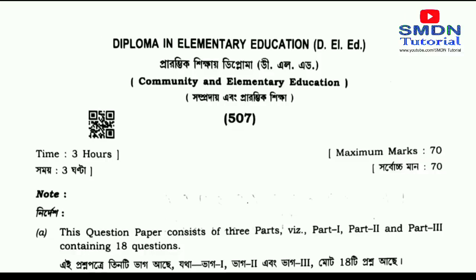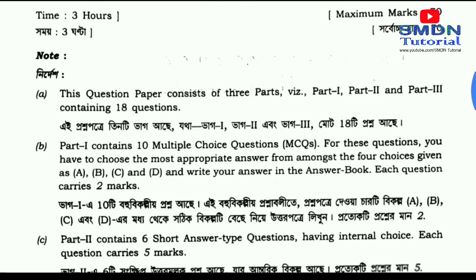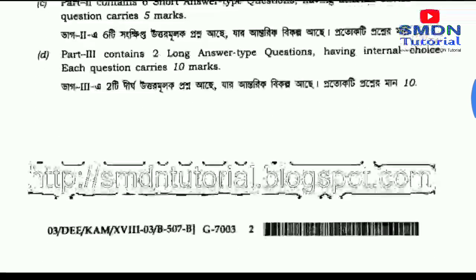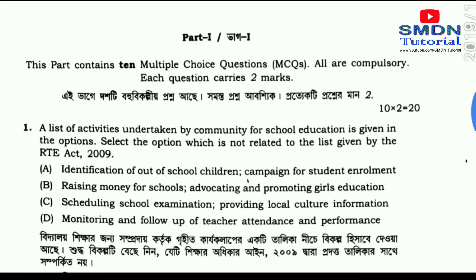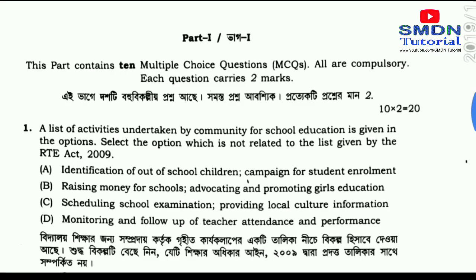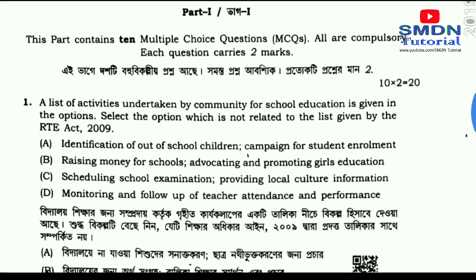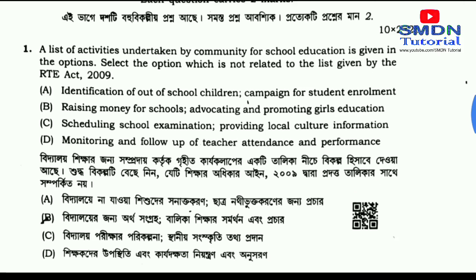507 Community and Elementary Education, Tripura Center — I have a question from MCQ. Question number 1: A list of activities undertaken by the community for school education is given in the options. Select the option which is not related to the list given by the RTE 2009.